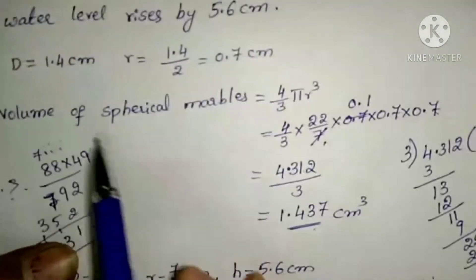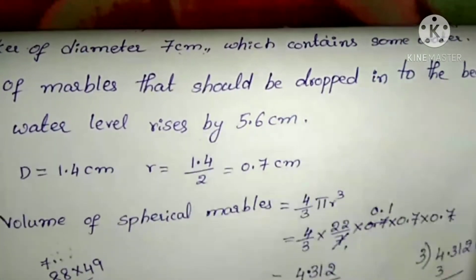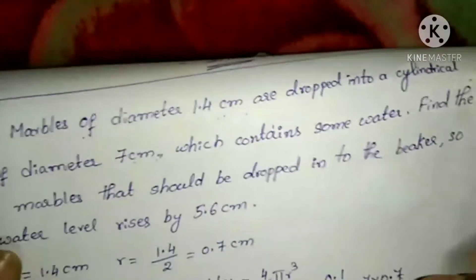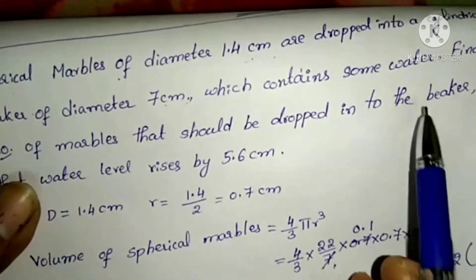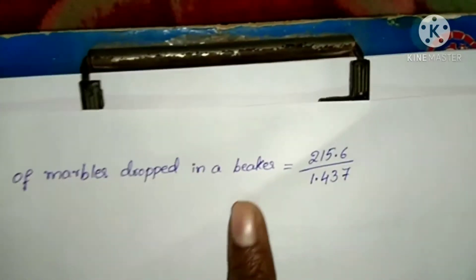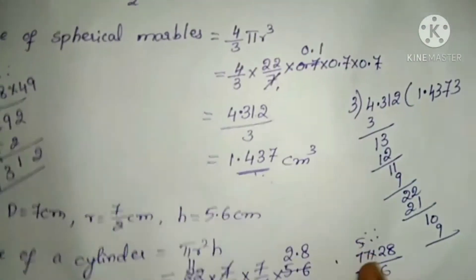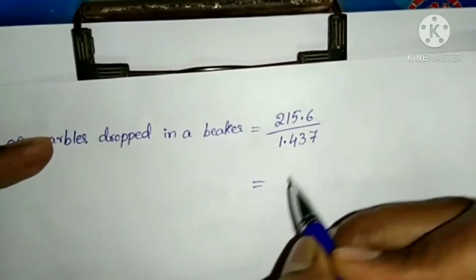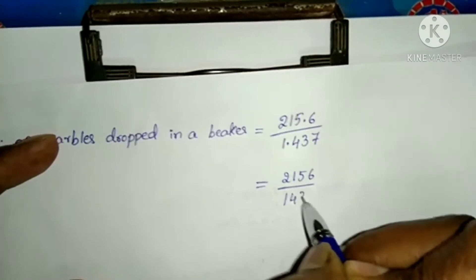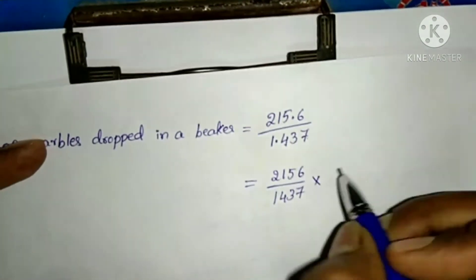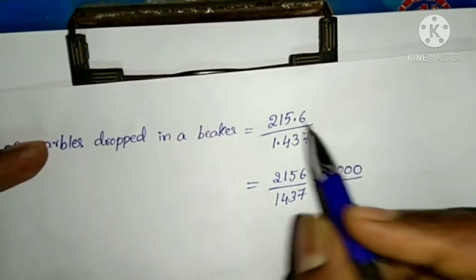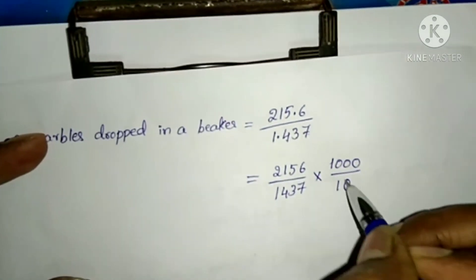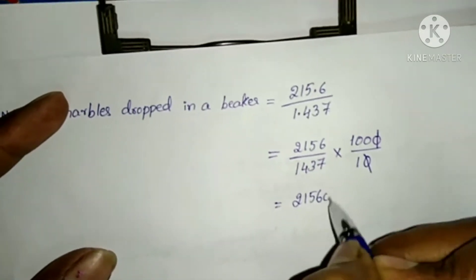Now we have the volume of the cylinder and volume of spherical balls. Number of marbles dropped in the beaker equals volume of cylinder divided by volume of spherical balls = 215.6 ÷ 1.437. Removing the decimal points: 215600 ÷ 1437.